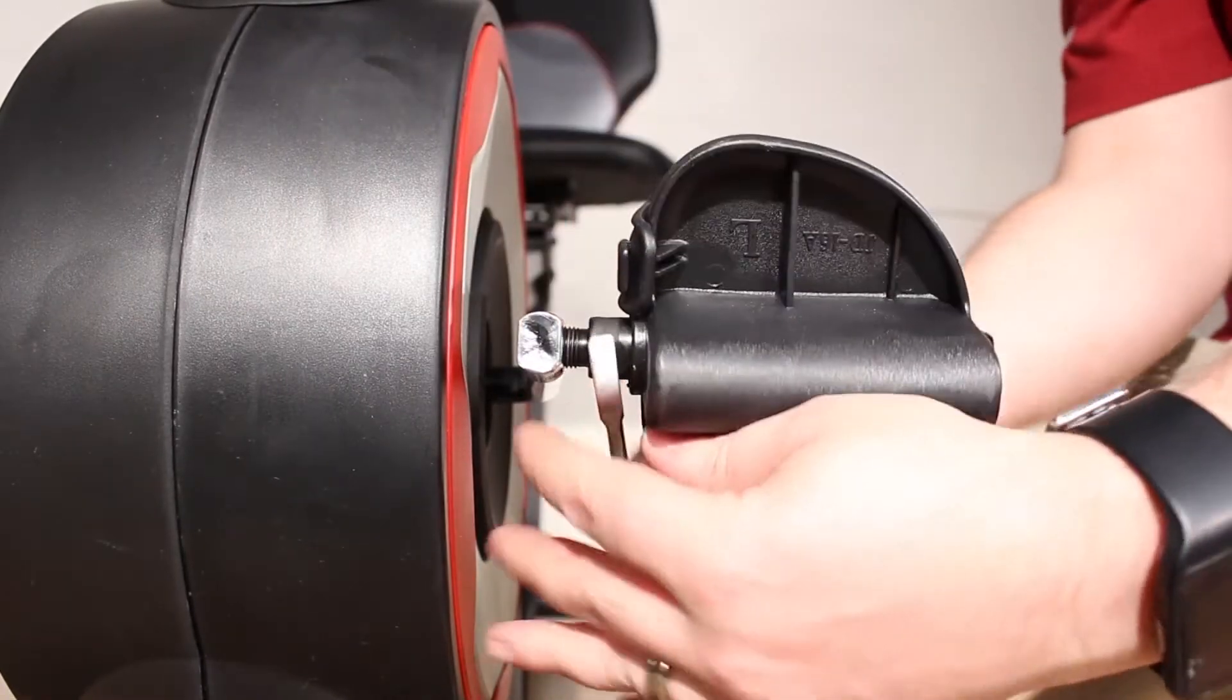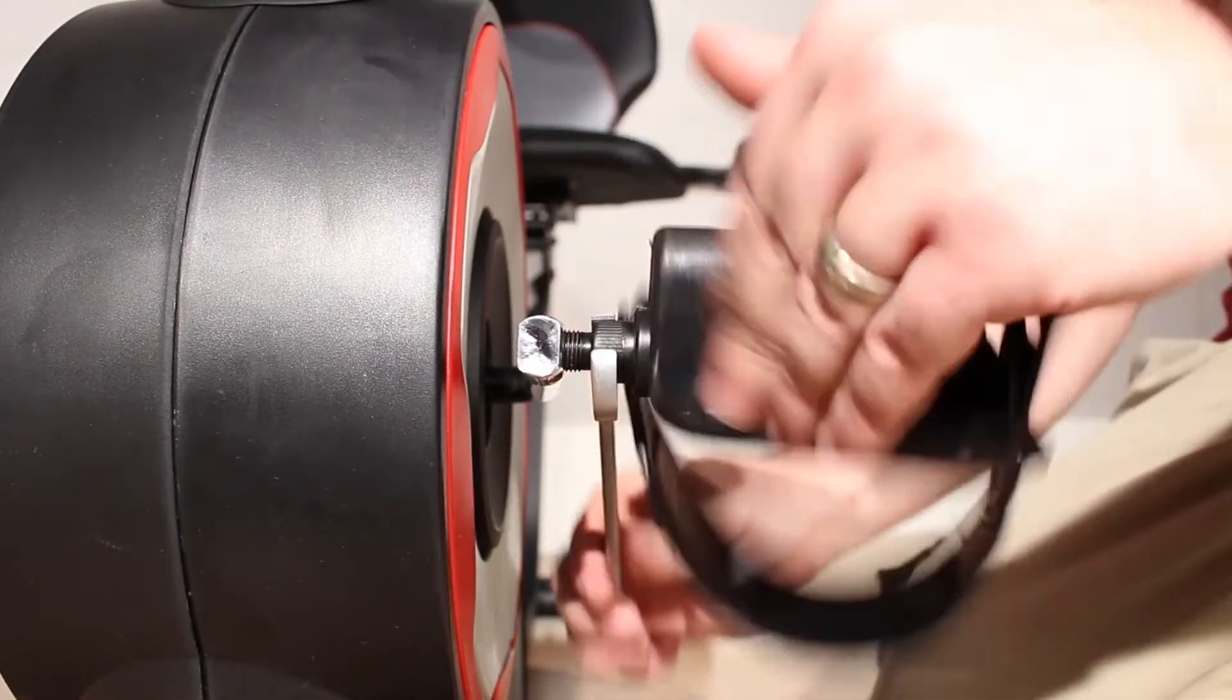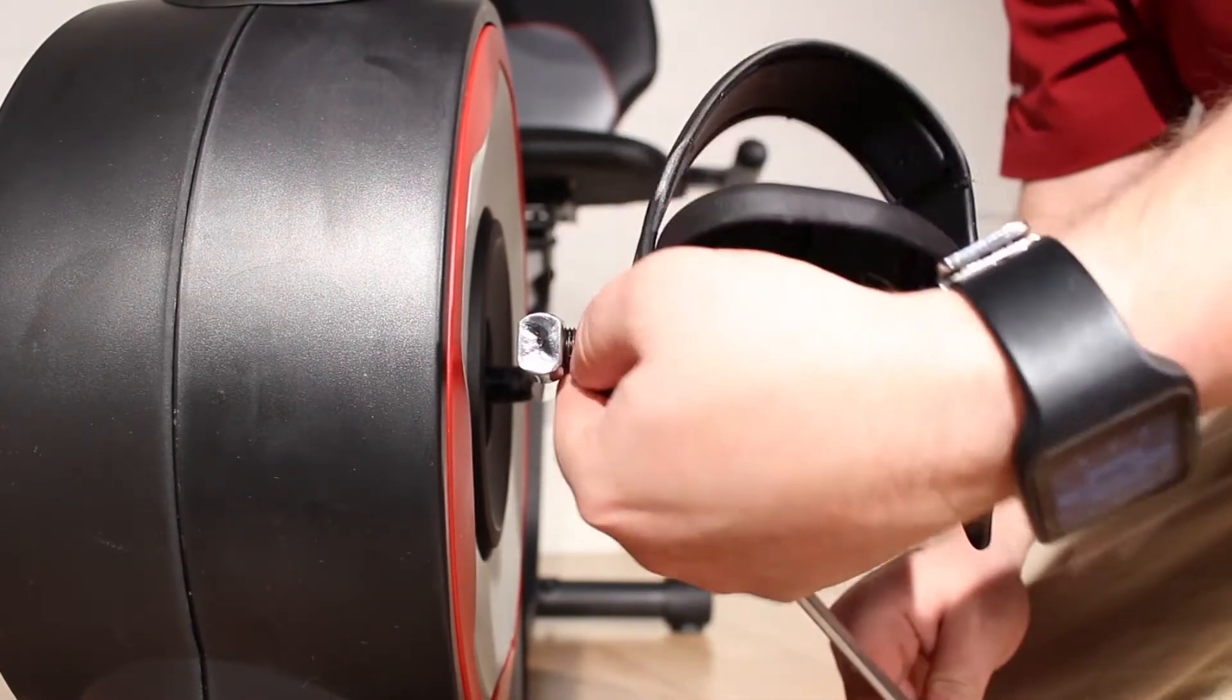Using a thin wrench, remove the left-hand pedal from the left-hand crank arm. Turn the wrench to the right or counterclockwise.